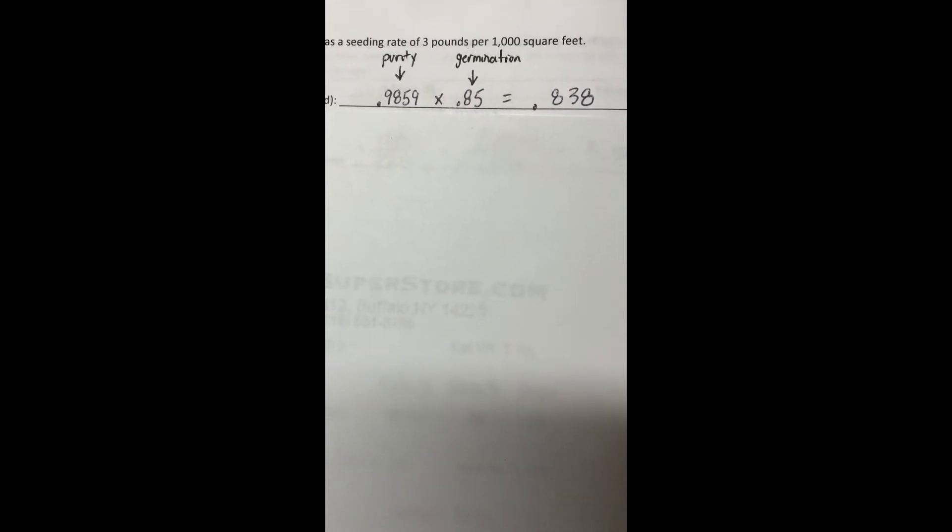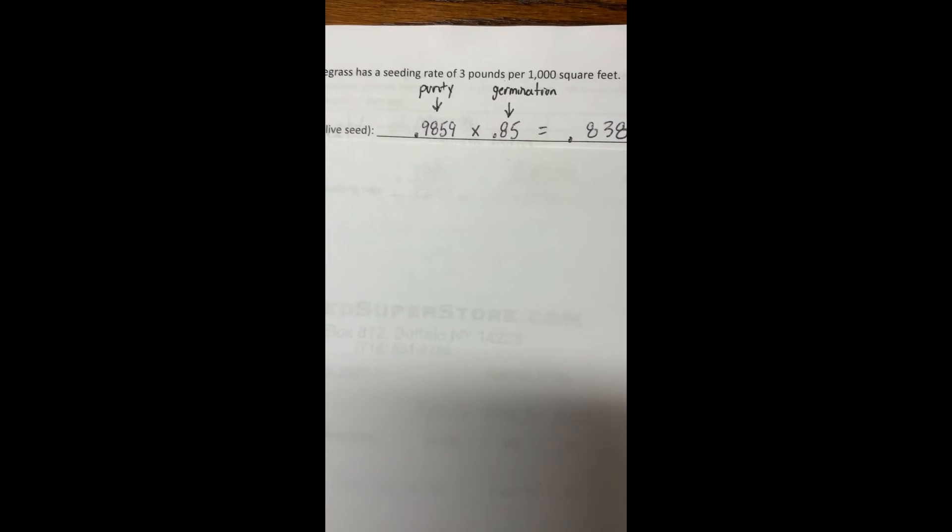Now this number is useful because it helps us adjust our seeding rate. So for example, let's say that we want to seed Prosperity Kentucky Bluegrass at a rate of 3 pounds per 1,000 square feet.